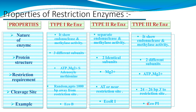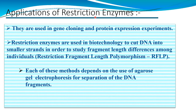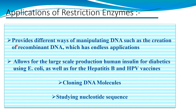Applications of restriction enzymes include gene cloning and protein expression experiments. They are used in biotechnology to cut DNA into small strands to study fragment length differences among individuals — known as Restriction Fragment Length Polymorphism (RFLP). These methods use agarose gel electrophoresis for DNA fragment separation, enable creation of recombinant DNA, allow large-scale production of human insulin for diabetes using E. coli, and are used in hepatitis B and HPV vaccine production, DNA cloning, and nucleotide sequence studies.